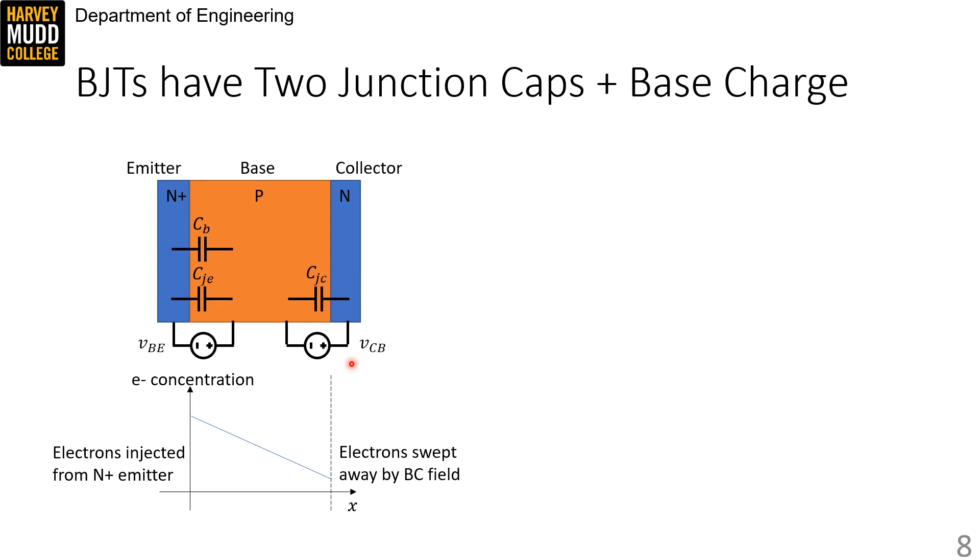The trick to identifying this capacitance is to recall that BJTs work by injecting a lot of charge at the left side of the base and resulting in the difference in minority charge carrier concentration to cause diffusion across the base.